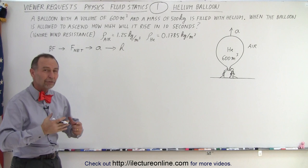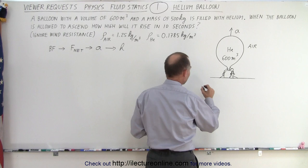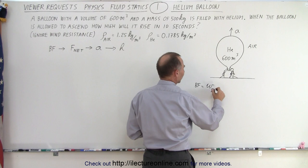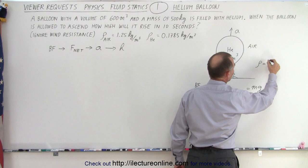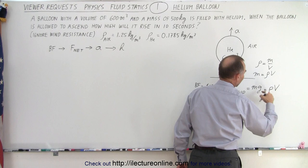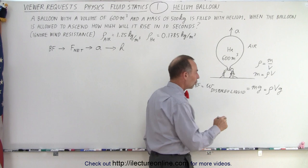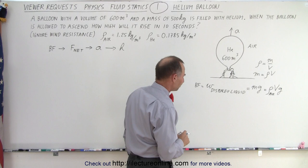So how do we find the buoyancy force? By definition, the buoyancy force is equal to the weight of the displaced liquid. In this case, the displaced liquid is the air — the balloon will push out of the way 600 cubic meters of air. So the buoyancy force equals the weight of the displaced liquid. Weight equals mass times g, and since density equals mass divided by volume, mass equals density times volume. We replace the mass of the displaced liquid with density times volume, keeping g. So that's how we calculate the buoyancy force — this is the volume of the balloon, this is the density of the air, and g is 9.8 meters per second squared.